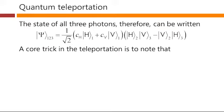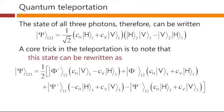A core trick in teleportation is to note that this state can be rewritten as a linear superposition of Bell states of photons 1 and 2. So we can easily check that this corresponds to the version here written out in terms of Bell states. But again, to emphasize, we're using the Bell states of photons 1 and 2, not photons 2 and 3.